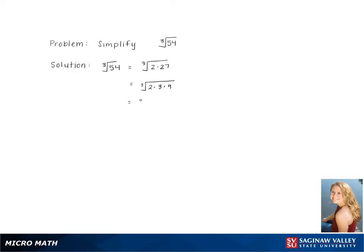Breaking it down even further, we get the cube root of 2 times 3 times 3 times 3. Pulling out the 3, we get 3 times the cube root of 2 as our final answer.